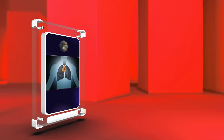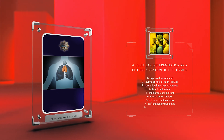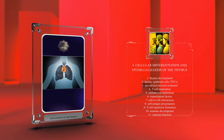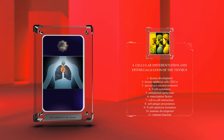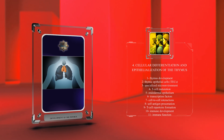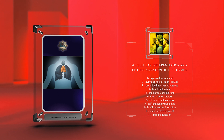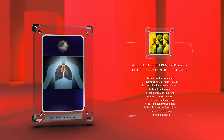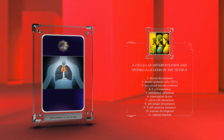Thymic epithelial cells (TECs) create a specialized microenvironment for T-cell maturation. TECs differentiate from the endodermal epithelium of the third pharyngeal pouch, involving specific transcription factors and cell-to-cell interactions. TECs facilitate self-antigen presentation, contributing to T-cell repertoire formation. Understanding TEC differentiation helps advance our understanding of immune development and function.